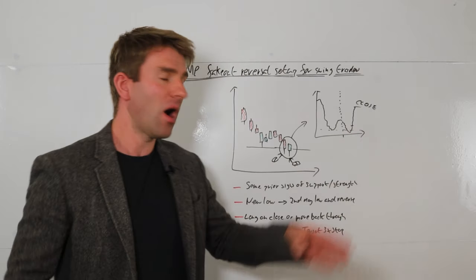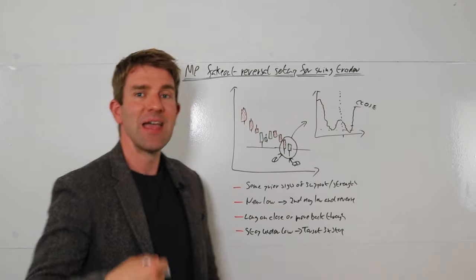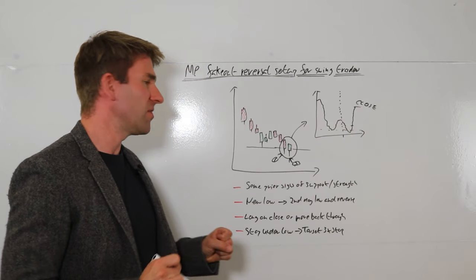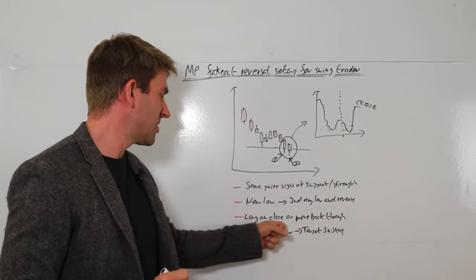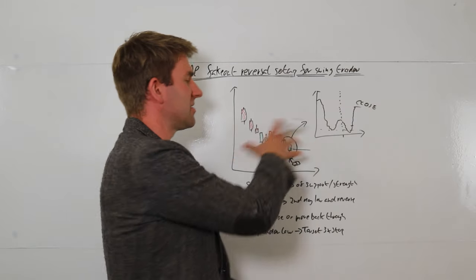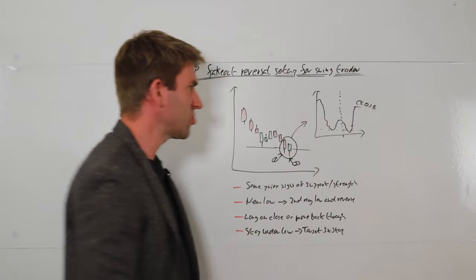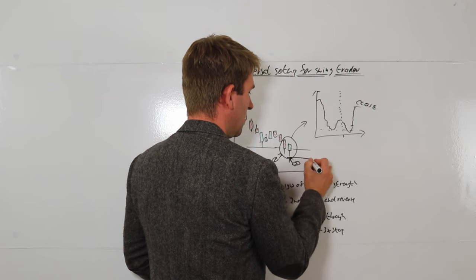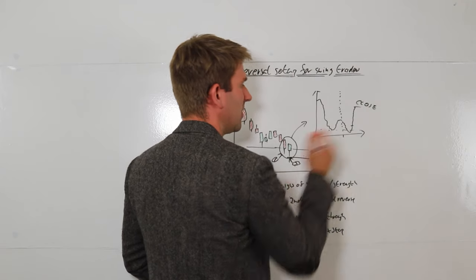And as soon as you get a 15 minute close above that low after penetrating through it, then you can take it. Rules for your stops and limits fairly very simple guys. Whilst we've taken the long position here in this example here, we have a stop under this low. So our stop would be here, that would be our stop.